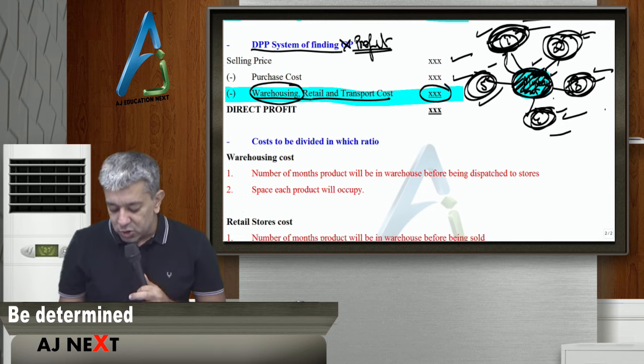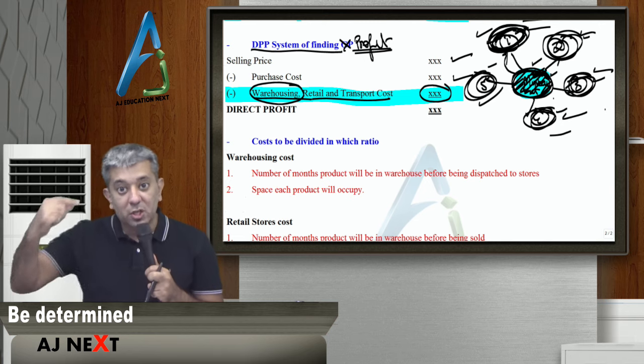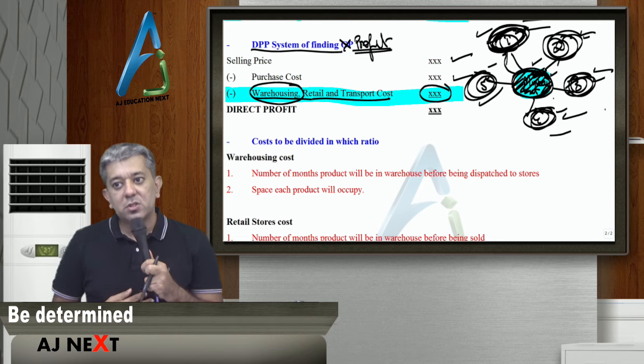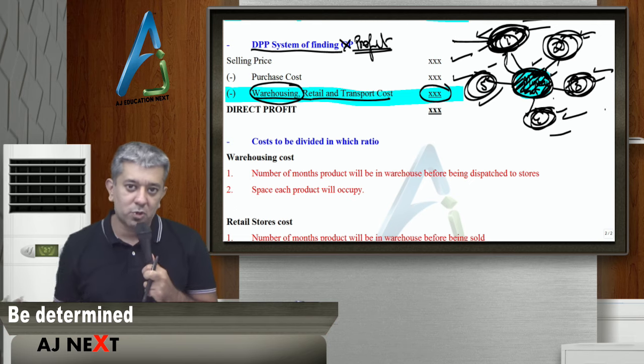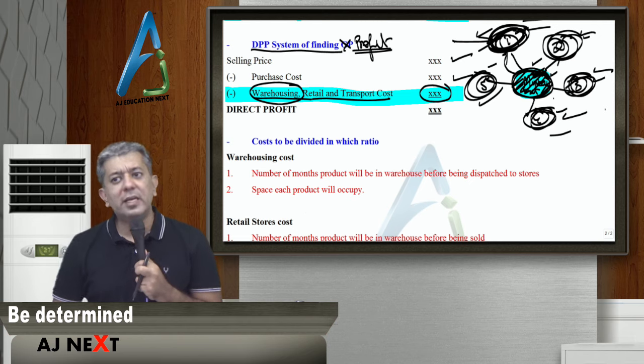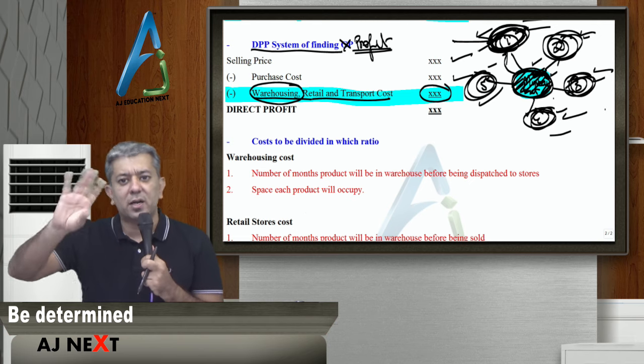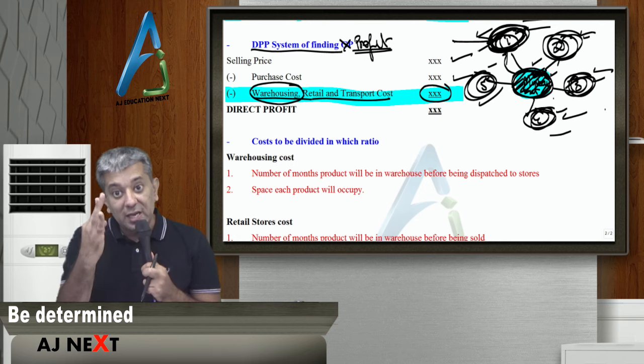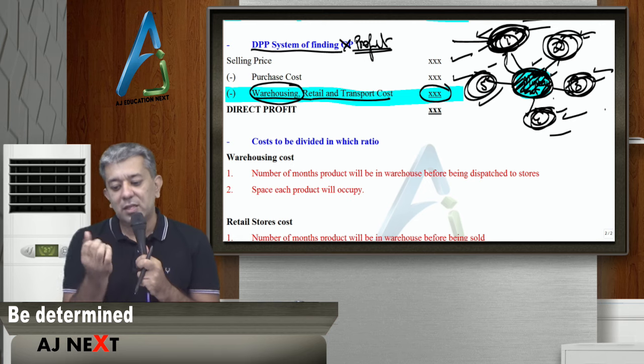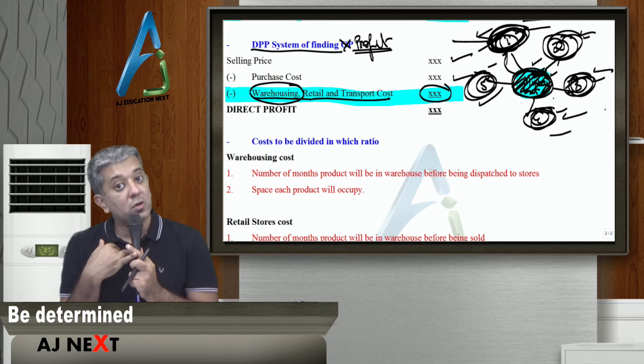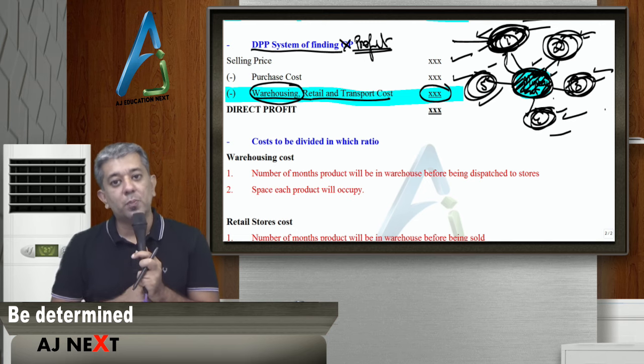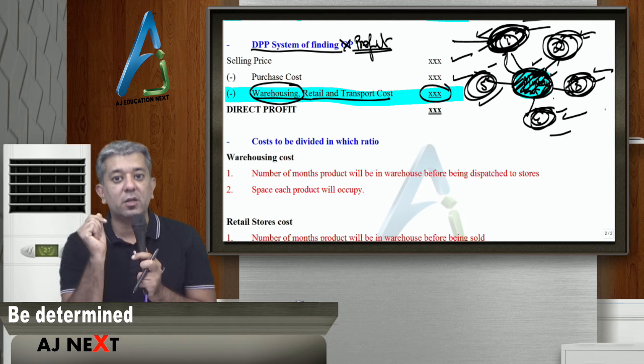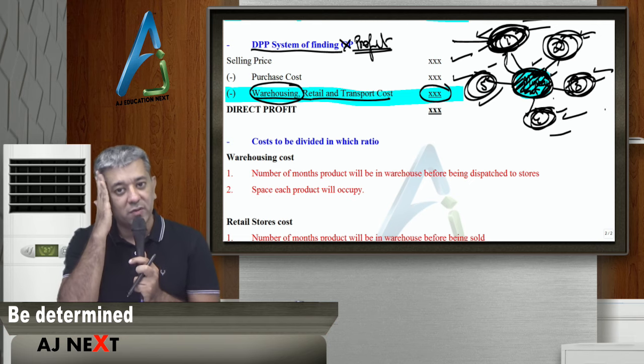Lastly, goods yaha par pahunch ke, uske baad bechne bhi toh hai. Suppose, koi ek stores, one ke andar, aaj goods pahunch gaye. Approximately, thirteen days ke baad, customer aake khareed leta hai. Toh tera din tak goods udhar rahe na, tera din ka cost charge karo, electricity cost ho sakta hai, rental cost ho sakta hai. Koi aur product jisko bikne ke liye, athra din lagta hai, usko zyada rental cost charge hona chahiye. That is whatever matters.